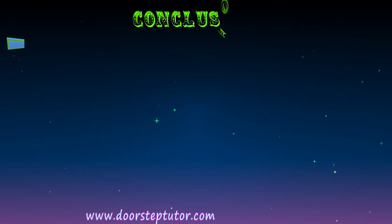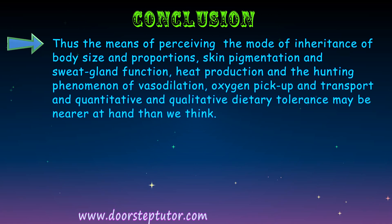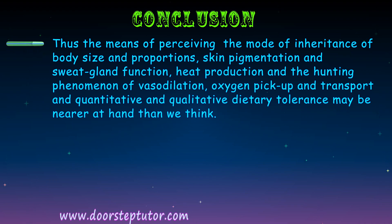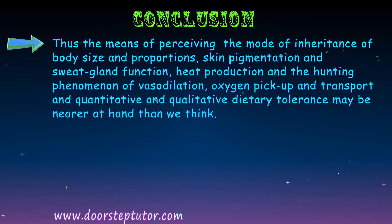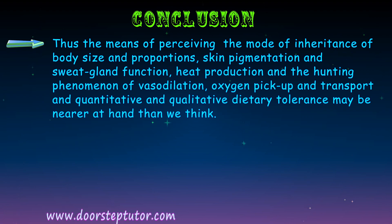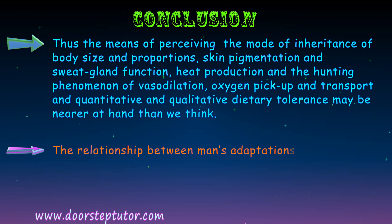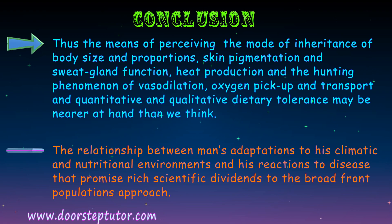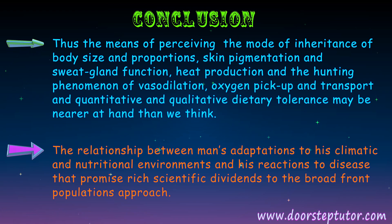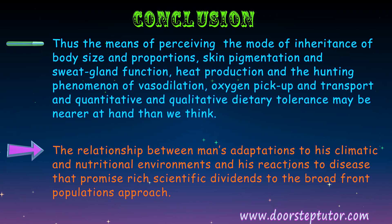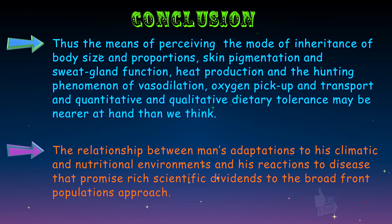In conclusion, the means of perceiving the mode of inheritance of body size and proportions, skin pigmentation, sweat gland function, heat production, the hunting phenomenon of vasodilation, oxygen pickup and transport, and qualitative and quantitative dietary tolerance may be nearer at hand than we think. The relationship between man's adaptations to his climatic and nutritional environments and his reactions to disease promises rich scientific dividends through a broad-front populations approach. This concludes the topic of biological adaptation of man to his environment.